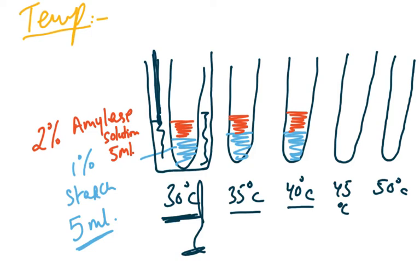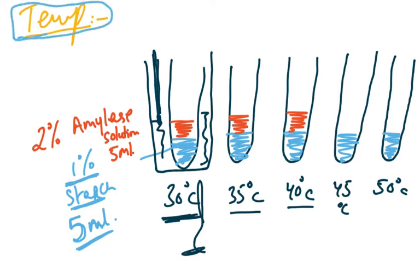To each test tube we add 1% starch solution — the concentration can be 2%, 3%, or 4%, but the important thing is that the volume and concentration remain the same. We use 5 ml of starch solution in each test tube. Temperature is the only variable we are changing; everything else is kept constant. We then add 2% amylase, keeping the volume the same — 5 ml — to each test tube.